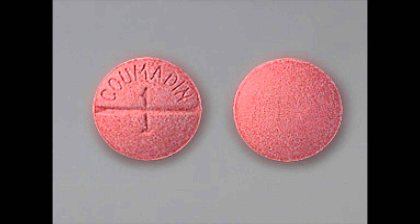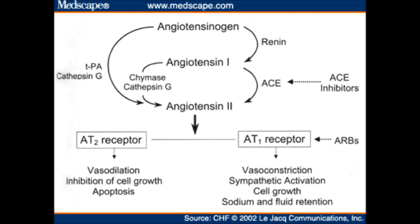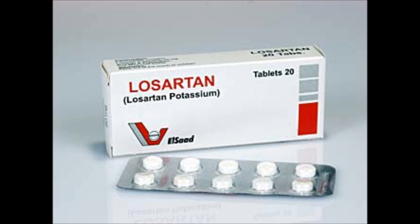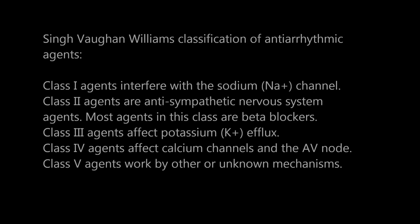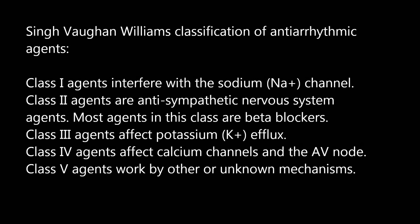Angiotensin receptor blockers, or ARBs, are primarily used for patients who need an ACE inhibitor but cannot take one due to cough. If a patient is coughing because of an ACE inhibitor, you give an ARB — angiotensin receptor blocker — which blocks the angiotensin receptor. Generics usually end in 'sartan,' like losartan, or losartan/hydrochlorothiazide (Hyzaar), and valsartan (Diovan).